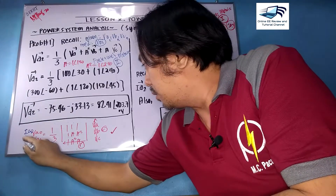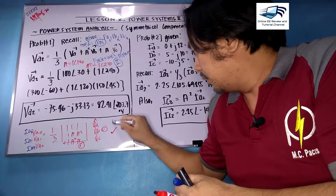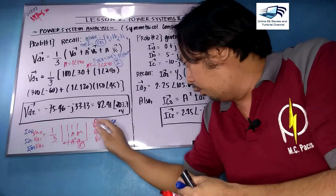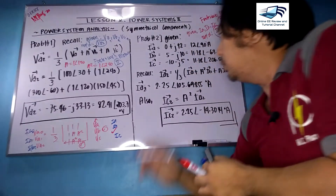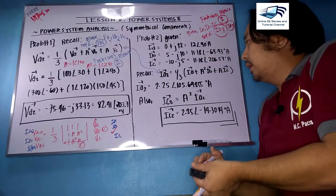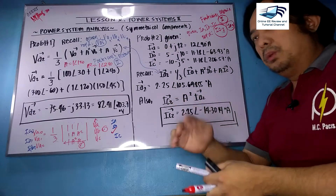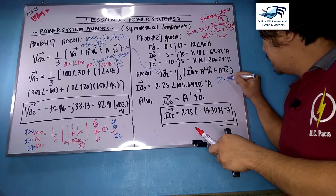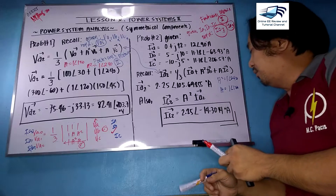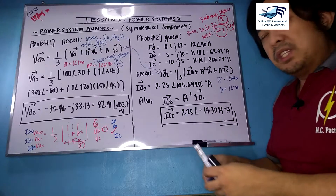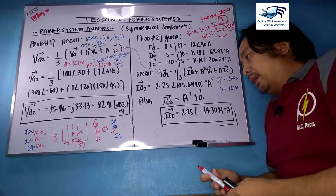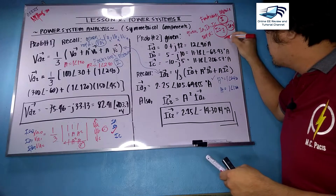Using the Fortescue matrix number 2 with currents instead of voltages: [IA0, IA1, IA2] = one-third × matrix × [IA, IB, IC]. Using the column-row technique and substituting A-squared = 1∠240° and A = 1∠120° into the equation one-third of IA + A-squared·IB + A·IC, this yields IA2 = 2.25∠105.855° amperes. Our main goal is to get IC2.